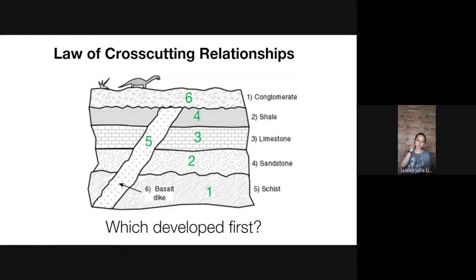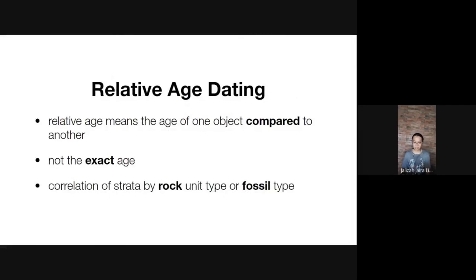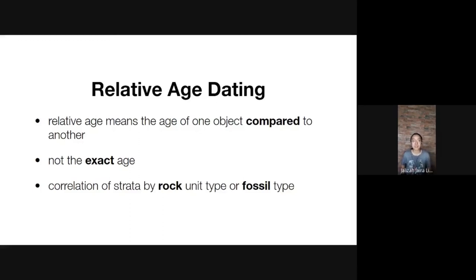In this exercise we applied multiple principles: superposition, horizontality, lateral continuity, and cross-cutting relationships. Relative age dating tells us the age of one object compared to another — it does not tell us the exact age. We correlate strata based on rock type and fossil type.